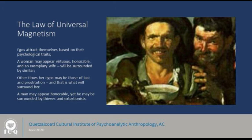If you start noticing egos in someone else — things that you feel you should criticize and judge — the reason you are seeing those is because there are aspects within you that are magnetically attracting those aspects in someone else. We referred to that yesterday as the ideoplastic mirror of existence. And this is why we have to be very watchful before we start issuing judgment and criticism of others. Look — there may be a woman who appears virtuous, an honorable exemplary wife, and during the day she is respected and surrounded by people who appear to be virtuous and honorable. But within the dark aspects of her own psychological city, her egos may be those of lust and prostitution.